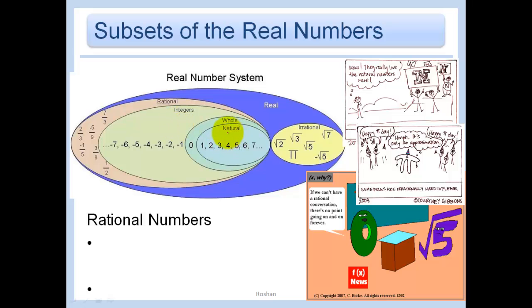The natural numbers are a subset of the whole numbers, and we say that because the whole numbers include everything that the natural numbers include, and also zero. The natural numbers are just your counting numbers, 1, 2, 3, and so on. The whole numbers include all the natural numbers and zero. The integers are all of our counting numbers plus the negative ones, and zero.